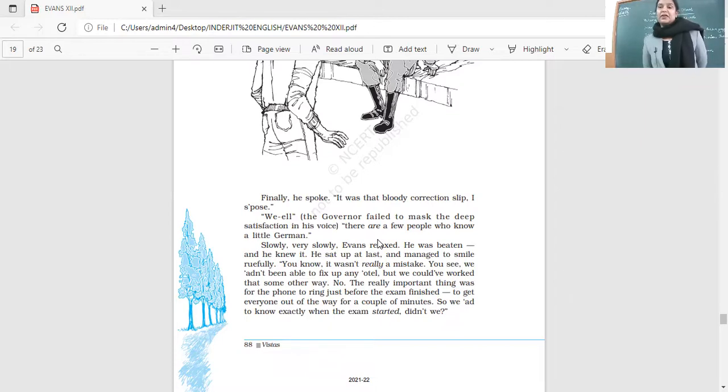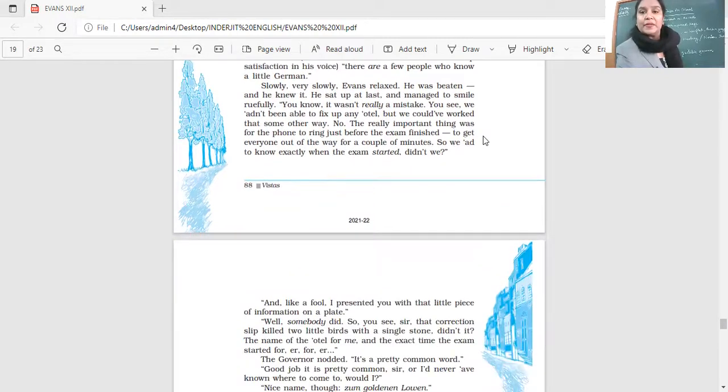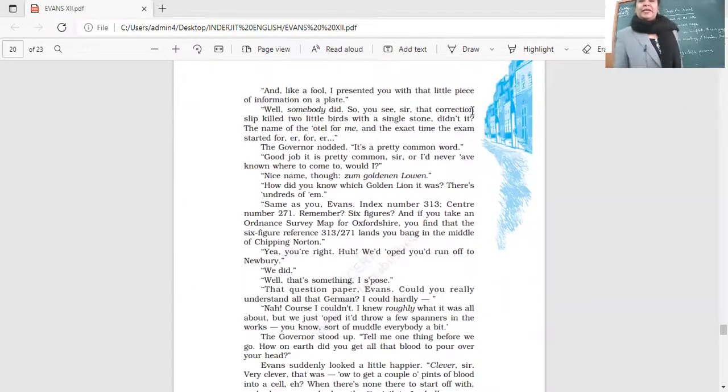The correction slip was not so important. What was important was the timing of the exam. The exam was supposed to start at 9:15, it started at 9:25. At 9:40 they made the call asking when the exam started. The governor gave them that information. They had to make a call five minutes before the exam got over to get the officers out of the way. So the starting of the exam was very important so they would know when the exam would end, and that was when their plan would start coming into action. 'Like a fool I presented you with that little piece of information on a plate.' 'Well somebody did, so you see sir, that correction slip killed two birds with a single stone, didn't it? The name of the hotel for me and the exact time the exam started.'